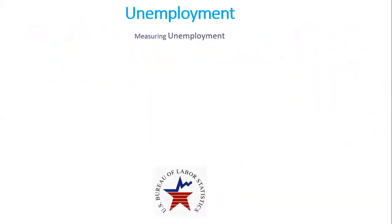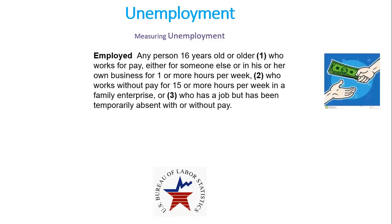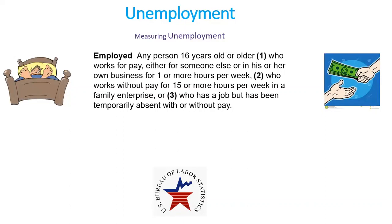In order to measure unemployment, we have to define when to consider a person as employed and when we consider them as unemployed. According to the U.S. Bureau of Labor Statistics, an employed person is any person 16 years old or older who works for pay either for someone else or in his or her own business for one or more hours per week, or who works without pay for 15 or more hours per week in a family enterprise, or who has a job but has been temporarily absent with or without pay.